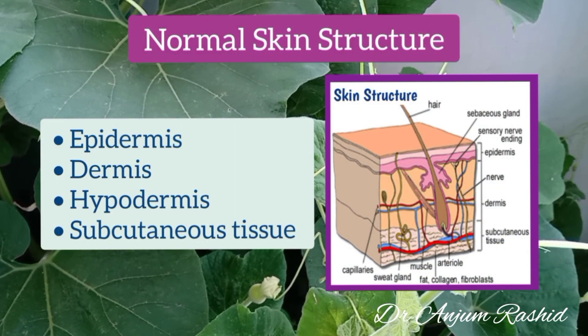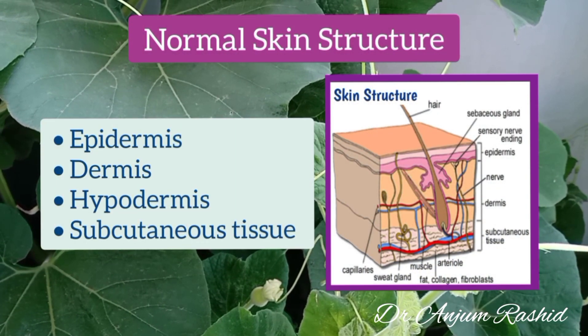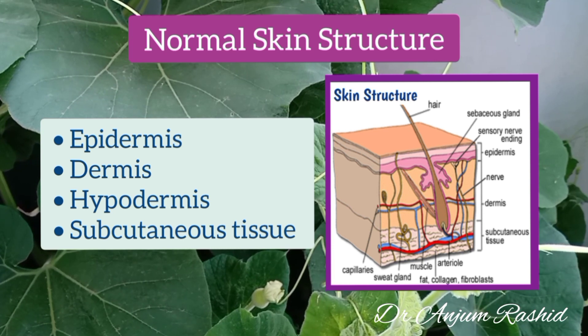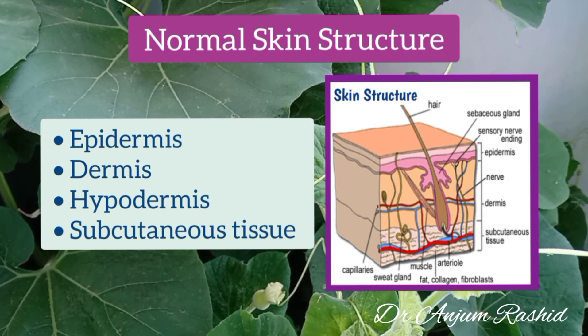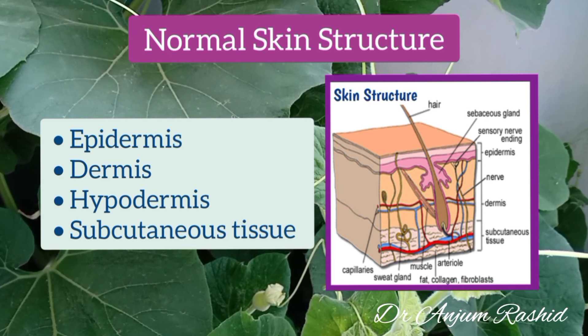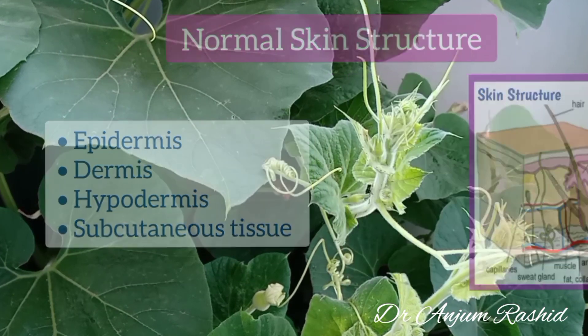Now this is the structure of normal skin. The upper layer is the epidermis, then lower down is the dermis, hypodermis and subcutaneous tissue.